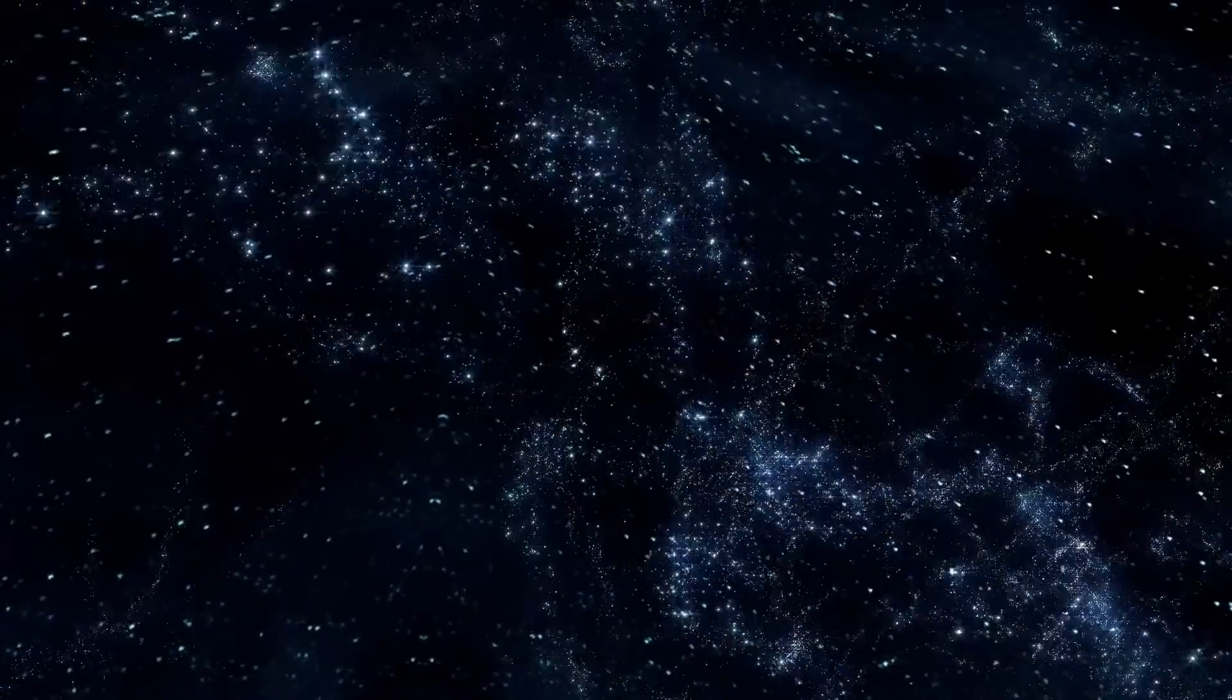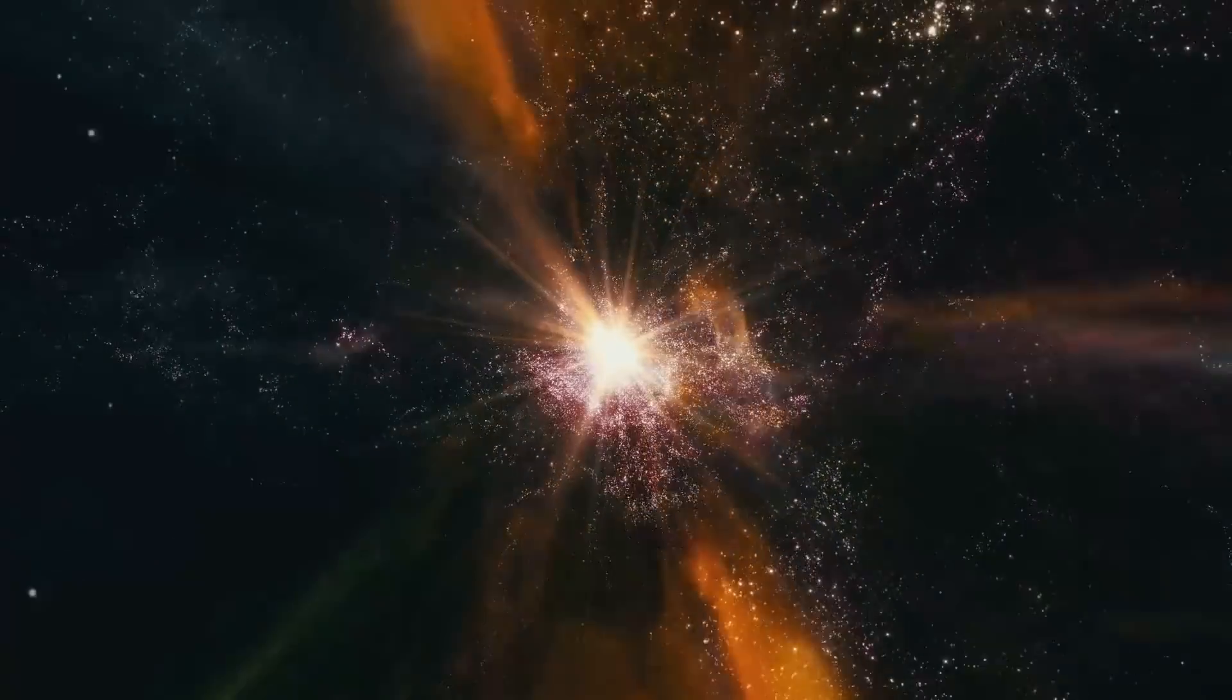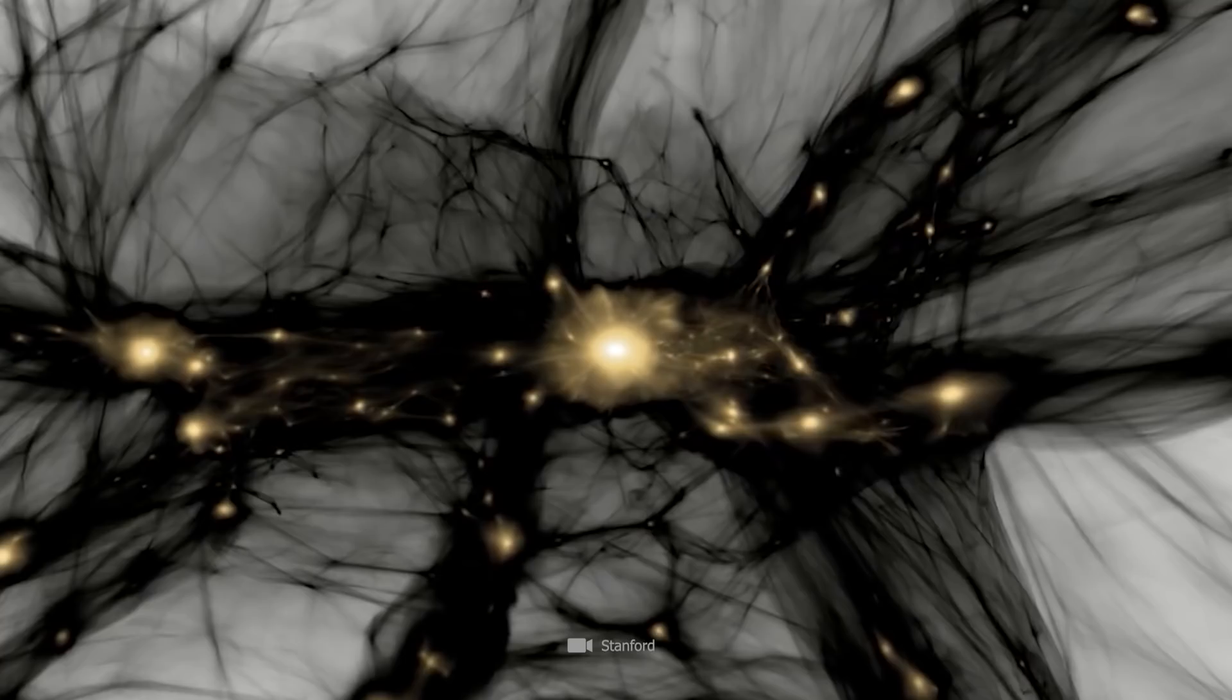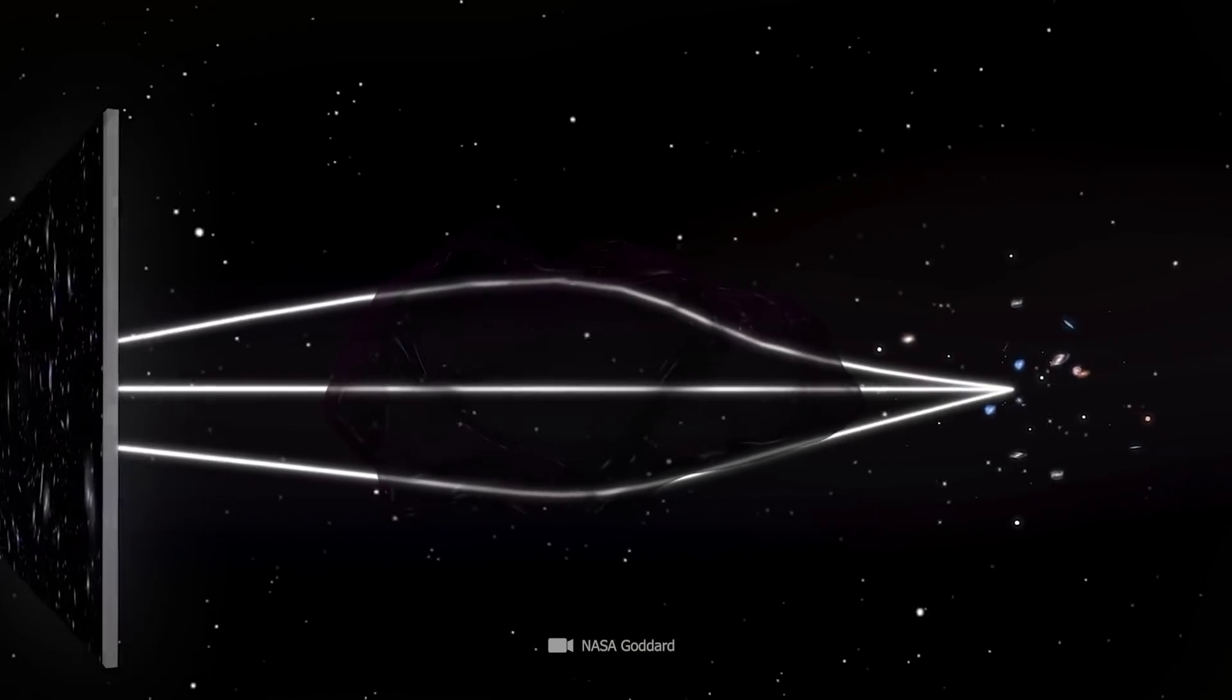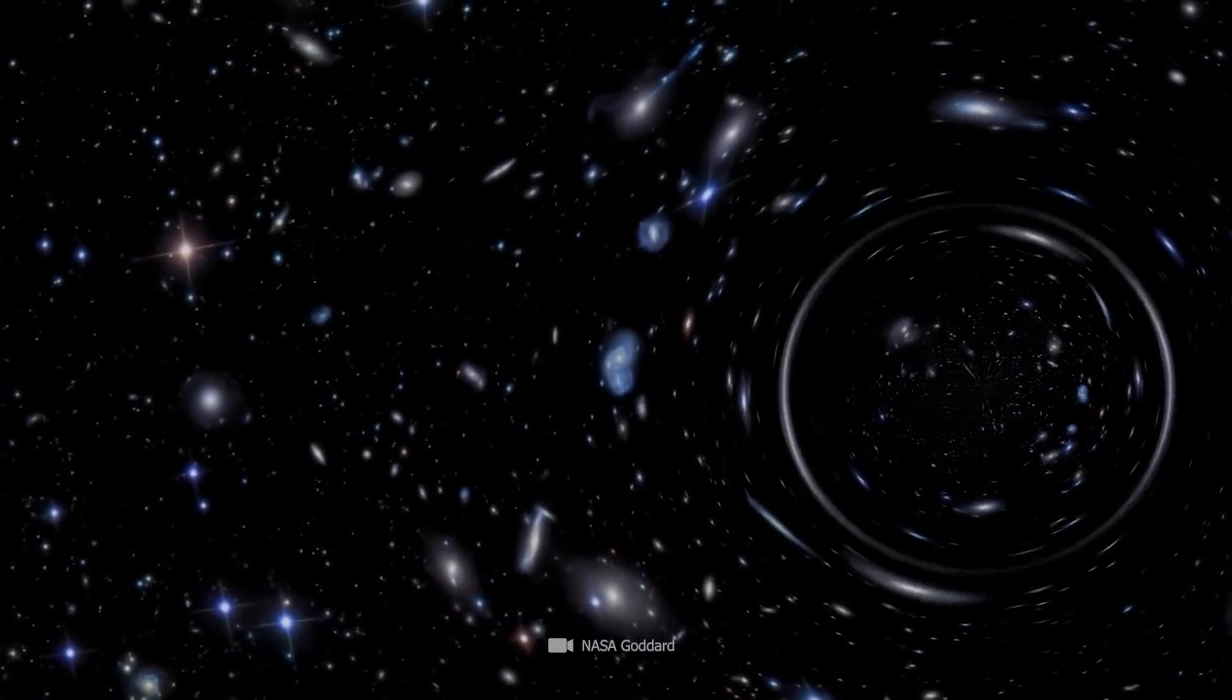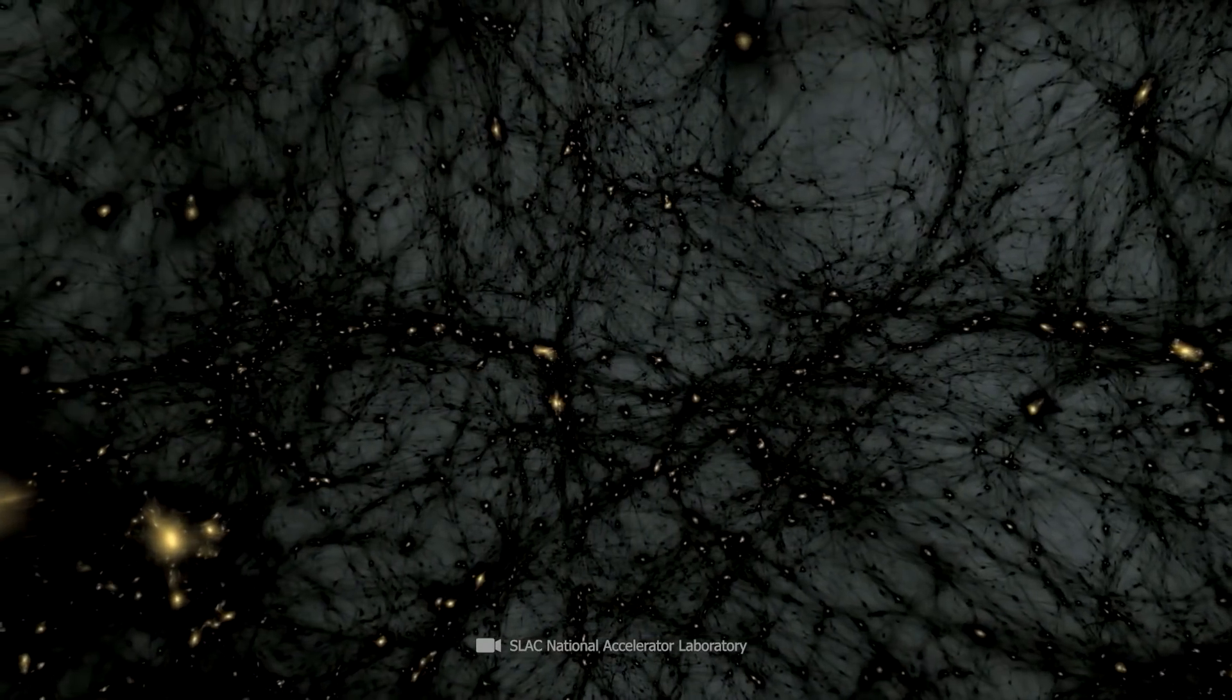Although dark matter plays an essential role in the natural constellations of the universe, scientists are currently unable to prove its existence directly. This is because dark matter does not interact with light. Therefore, researchers rely within their theories exclusively on those apparent effects dark matter exerts on visible matter in the universe.